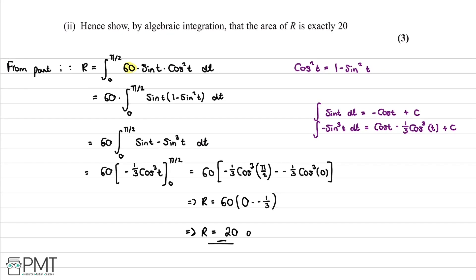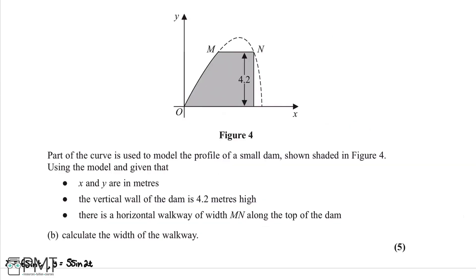We've shown R = 20 as required. This question was worth three marks: the first for getting the integral into an integrable form using the cos²(t) identity; the second for integrating correctly; and the third for applying the limits correctly and concluding that R = 20.